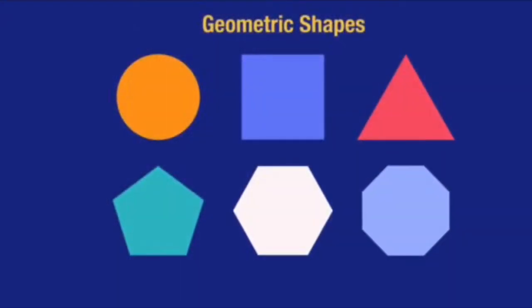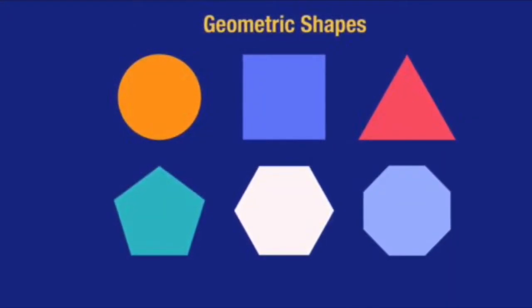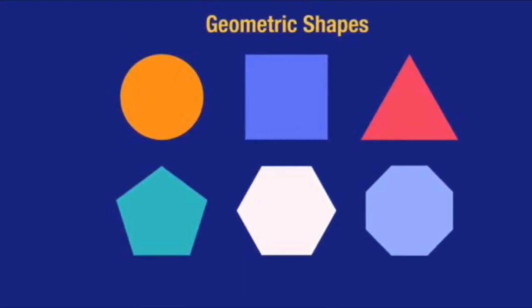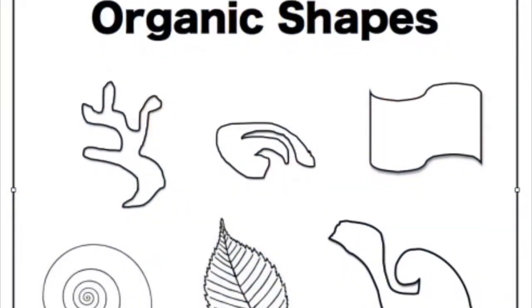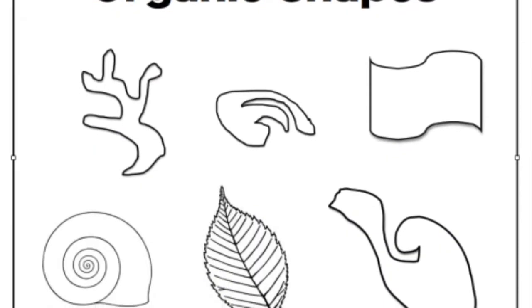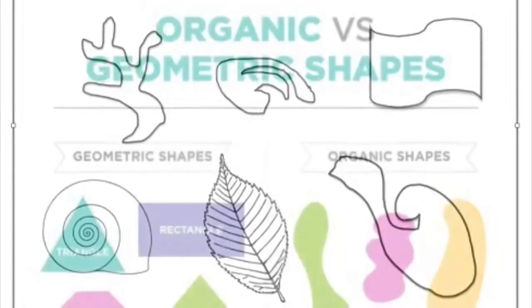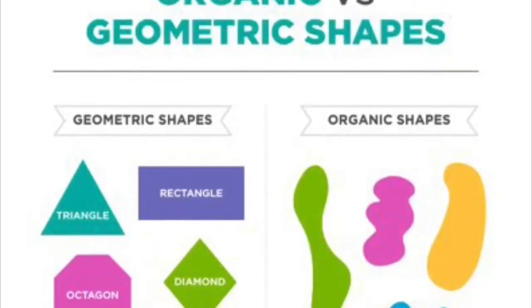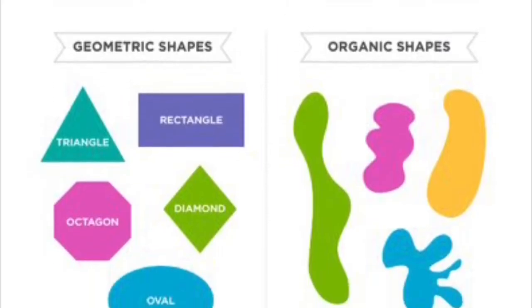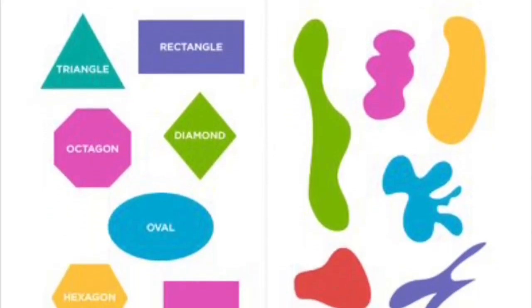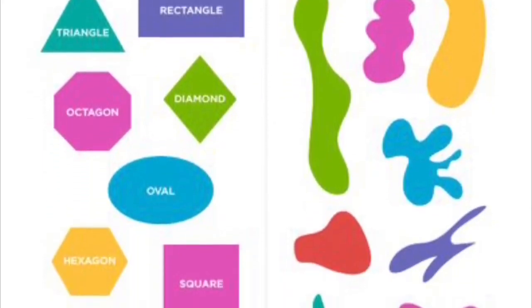So there's a really cool math connection here as well. We are going to focus on geometric shapes, or shapes with straighter edges, and organic shapes, or shapes that do not have straight edges. Here you can see the difference between geometric shapes and organic shapes.